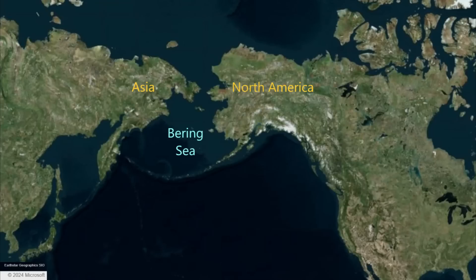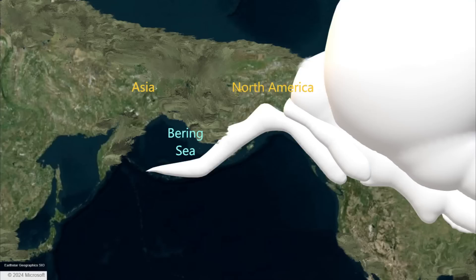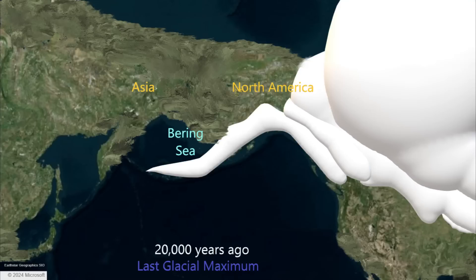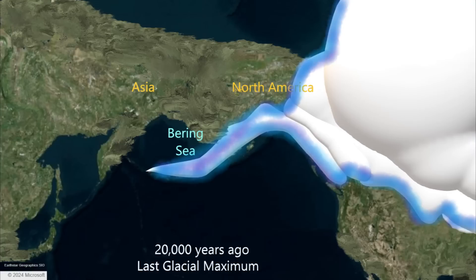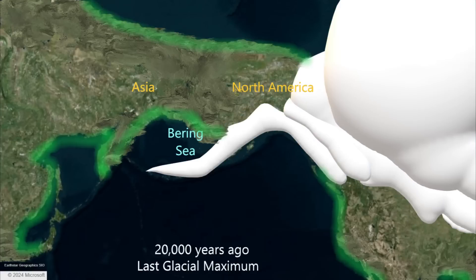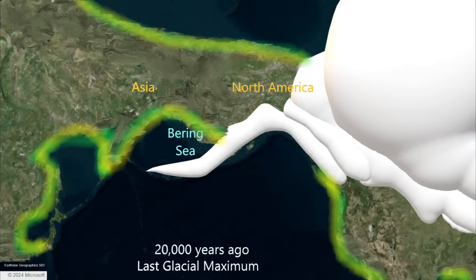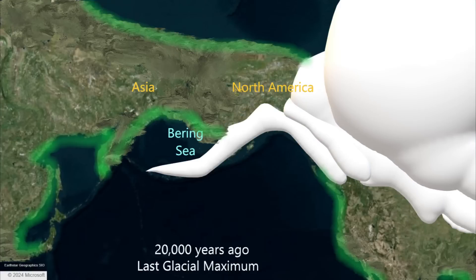We are going to go back in time. At 20,000 years ago, we are at the last glacial maximum. Ice covers modern Canada and the northern United States. Because so much water is locked up in the ice, the sea levels are much lower.